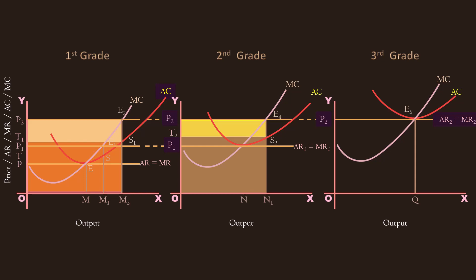Third grade land is brought under cultivation because the price is high enough to enable cultivators to cover the cost of cultivation. Its cost of cultivation is O P2 E5 Q. Its revenue is also O P2 E5 Q. Revenue equals cost. Hence, third grade land earns no rent. It is marginal land.